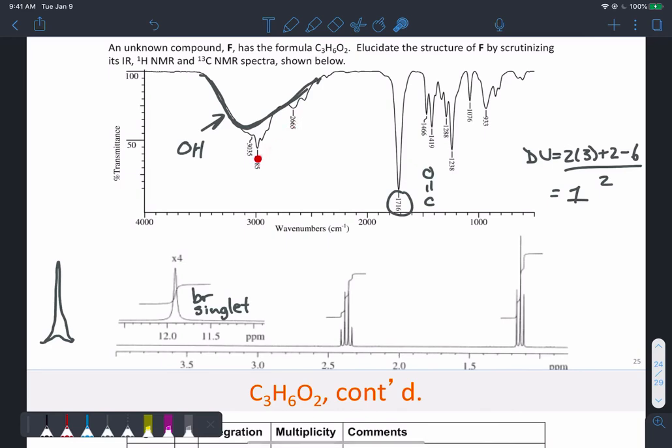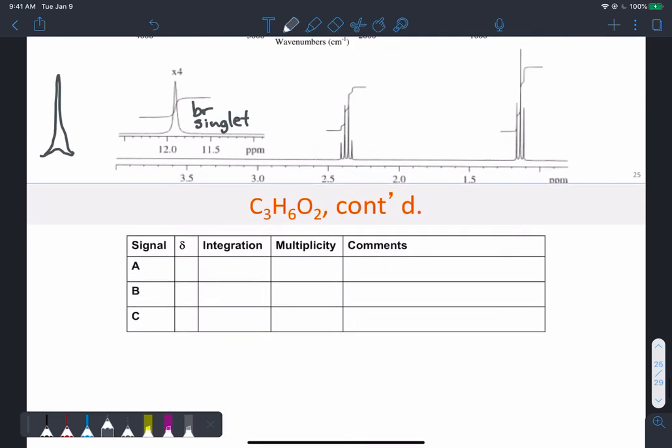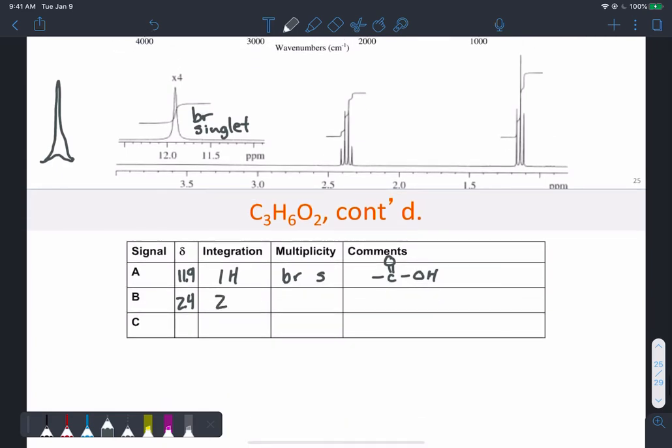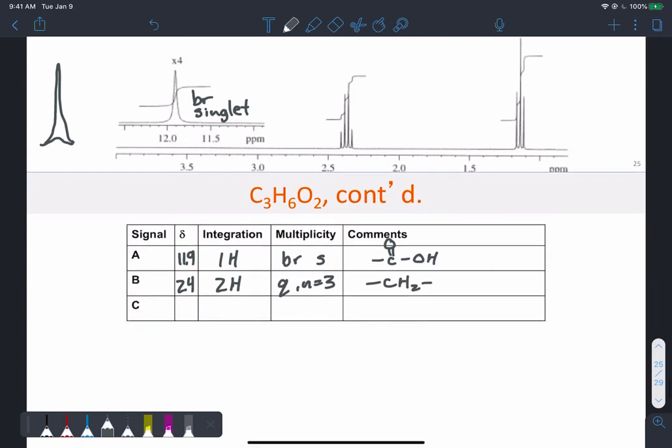And that's supported by this peak over at 12 here, the broad singlet. That's where carboxylic acid protons appear in the proton NMR. So it looks then that we have a carboxylic acid, and then just some peaks, the regular kind of peaks that we see. So we've got that peak around 11.9, 1H broad singlet, and we've said that it's the carboxylic acid. And we've got a peak at say 2.4 integrating for two, it's a quartet, so N equals three. So we're likely thinking about a CH2 there. And then we've got something at 1.1 integrating for three protons as a triplet, so next to two neighbors, that looks like that's a methyl group.